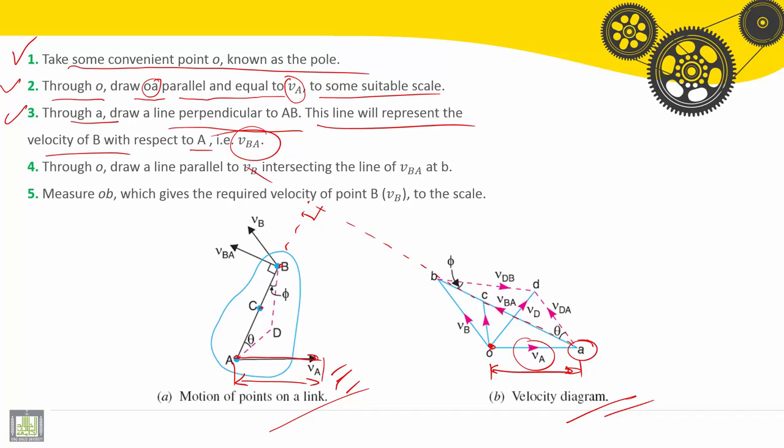Now, how to find the point B? This is the first step. Through O, draw the line parallel to VB. From O, we'll draw the line parallel to VB. This is VB.